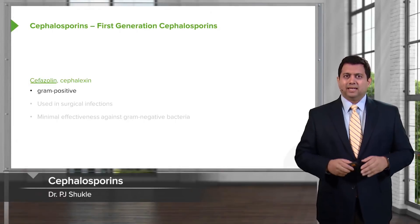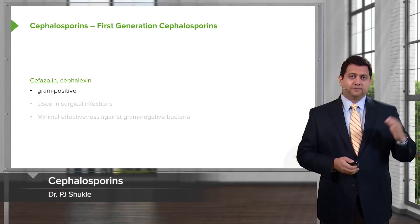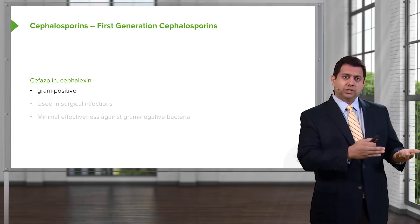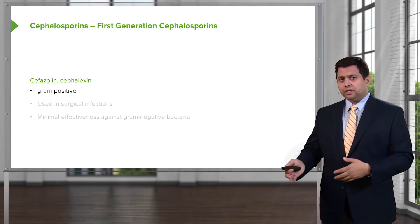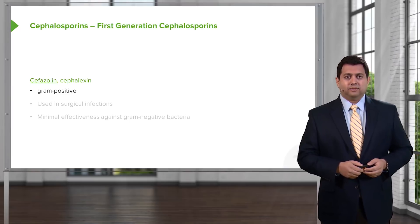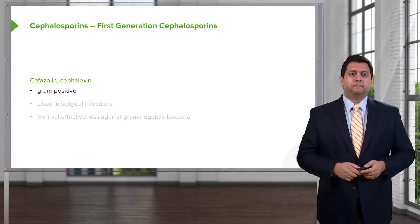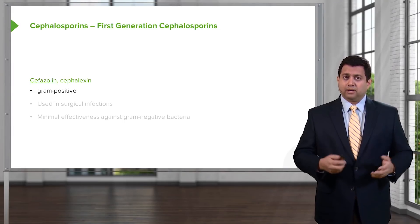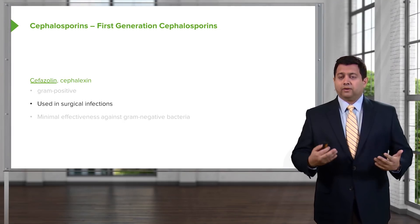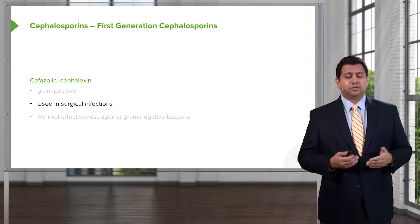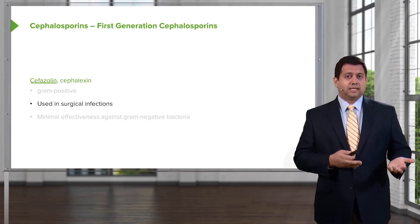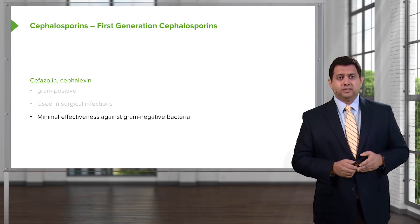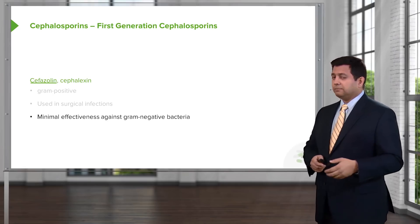Let's talk about cephalosporins. We divide them into first, second, third, and fourth generation. In general, the first generation are more gram-positive active, and the fourth generation tend to be more gram-negative. Cefazolin and cephalexin are first generation agents. They're gram-positive active and very useful in surgical infections because a lot of surgical infections come from Staph aureus and other skin surface agents. There is minimal effectiveness against gram-negative bacteria.